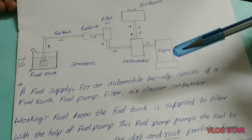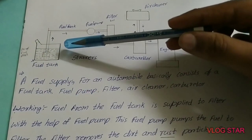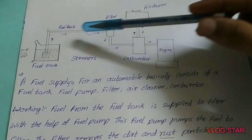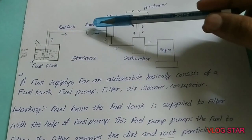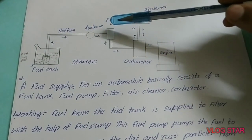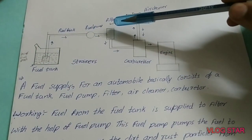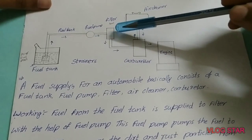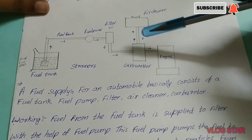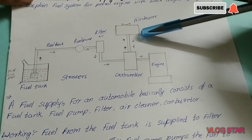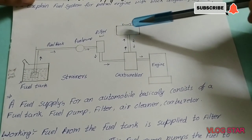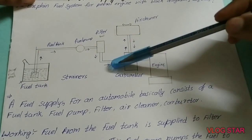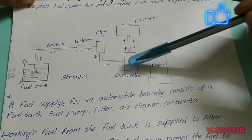Let's discuss how it works. The fuel tank contains the fuel, and the fuel passes through the filter with the help of the fuel pump. The filter removes dust and rust particles from the fuel and passes it to the air cleaner. The air cleaner purifies the air and passes it to the carburetor.